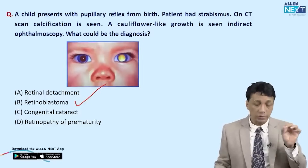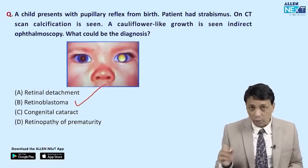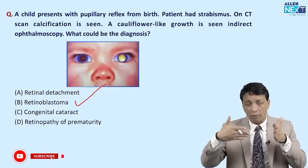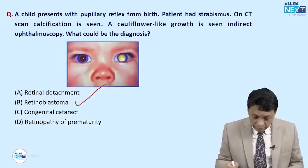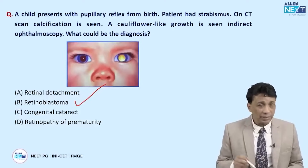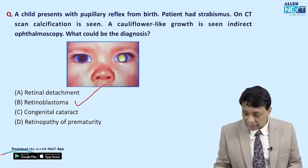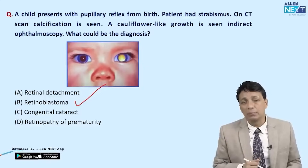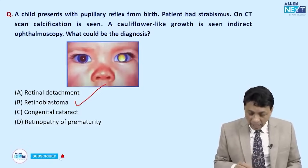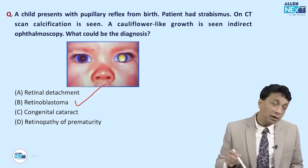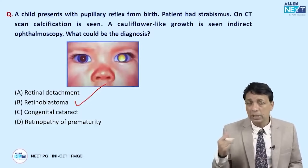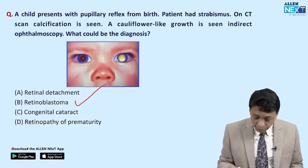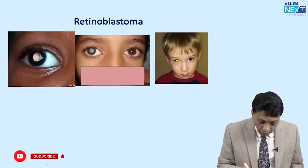There are so many clues for retinoblastoma. First, leukocoria — the white pupil reflex. Second, squint, which is the second commonest presentation of retinoblastoma after leukocoria. Third, calcification — the most important sign, because it is the calcification that appears as the white-colored pupil. Fourth, a cauliflower-like growth is the typical appearance of retinoblastoma on direct ophthalmoscopy.